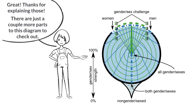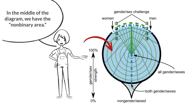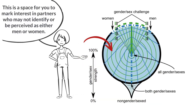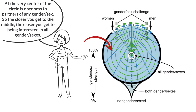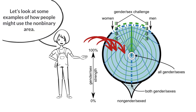There are just a couple more parts to this diagram to check out. In the middle of the diagram, we have the non-binary area — a space for you to mark interest in partners who may not identify or be perceived as either men or women. At the very center of the circle is openness to partners of any gender sex, so the closer you get to the middle, the closer you get to being interested in all gender sexes.